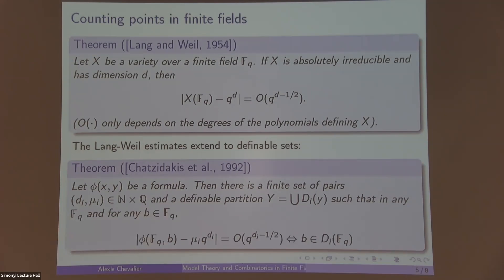Okay, so here μ_i is an approximation of the size of φ, but what's interesting is in the previous slide we had ultraproducts. Really, when we move to an ultraproduct, μ_i becomes an exact measure.